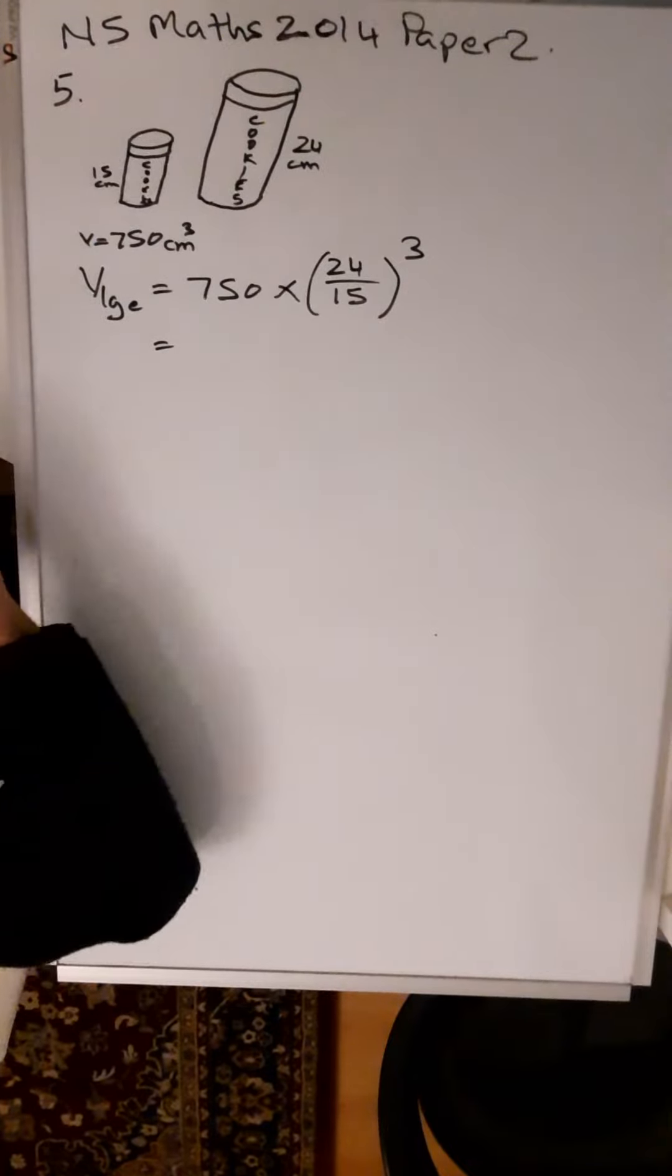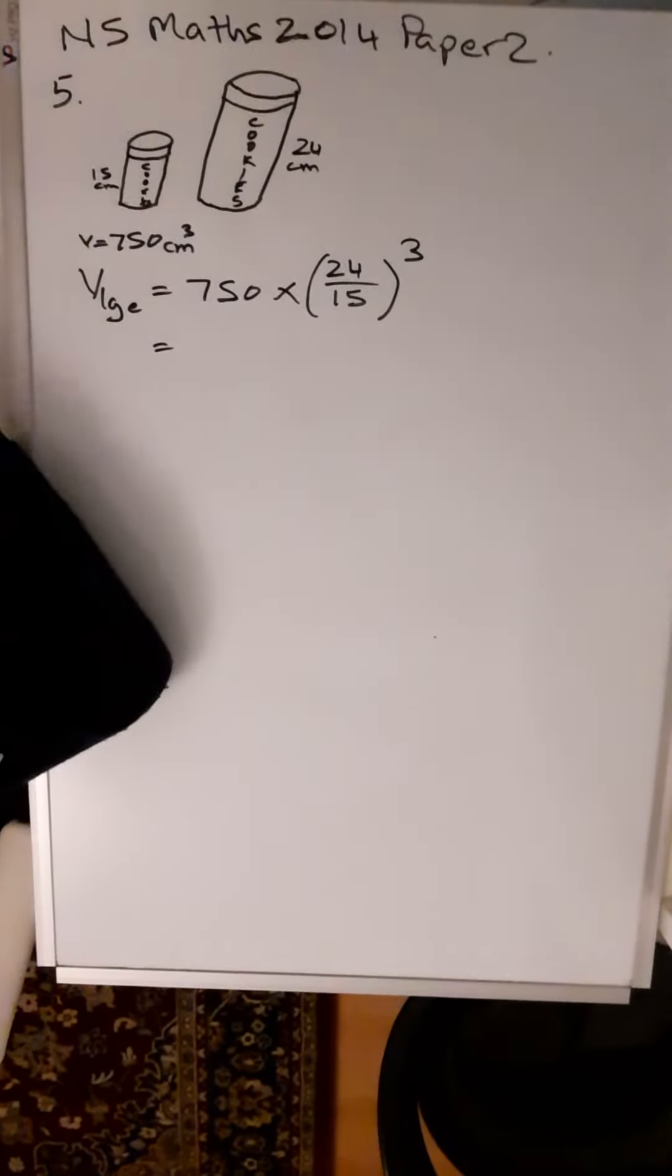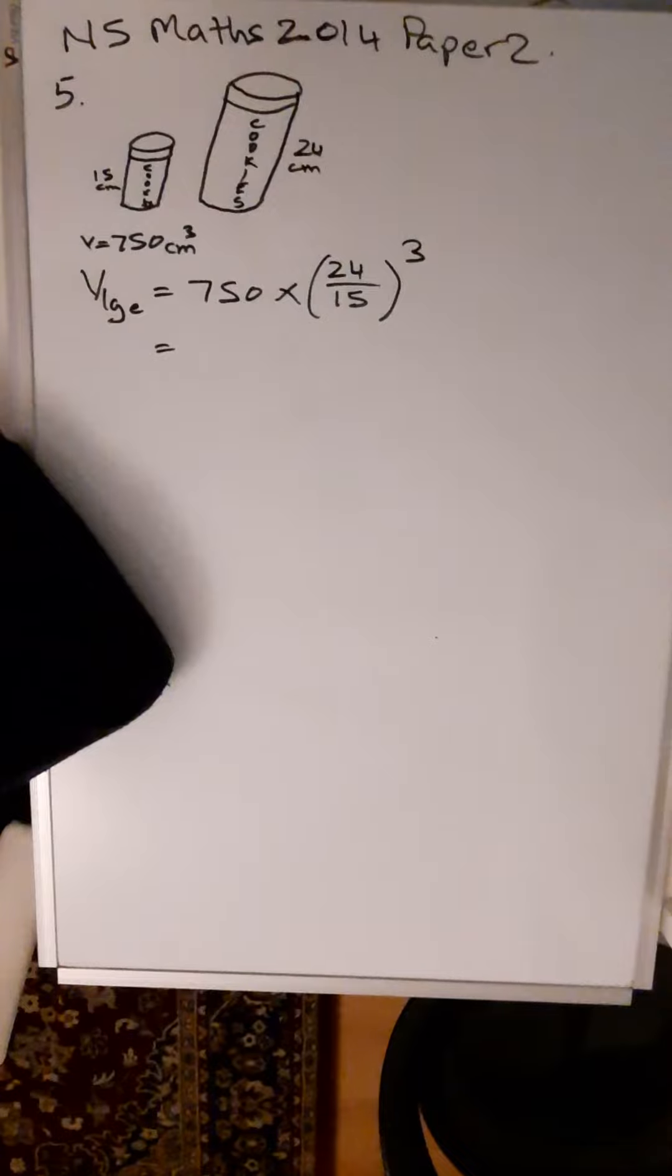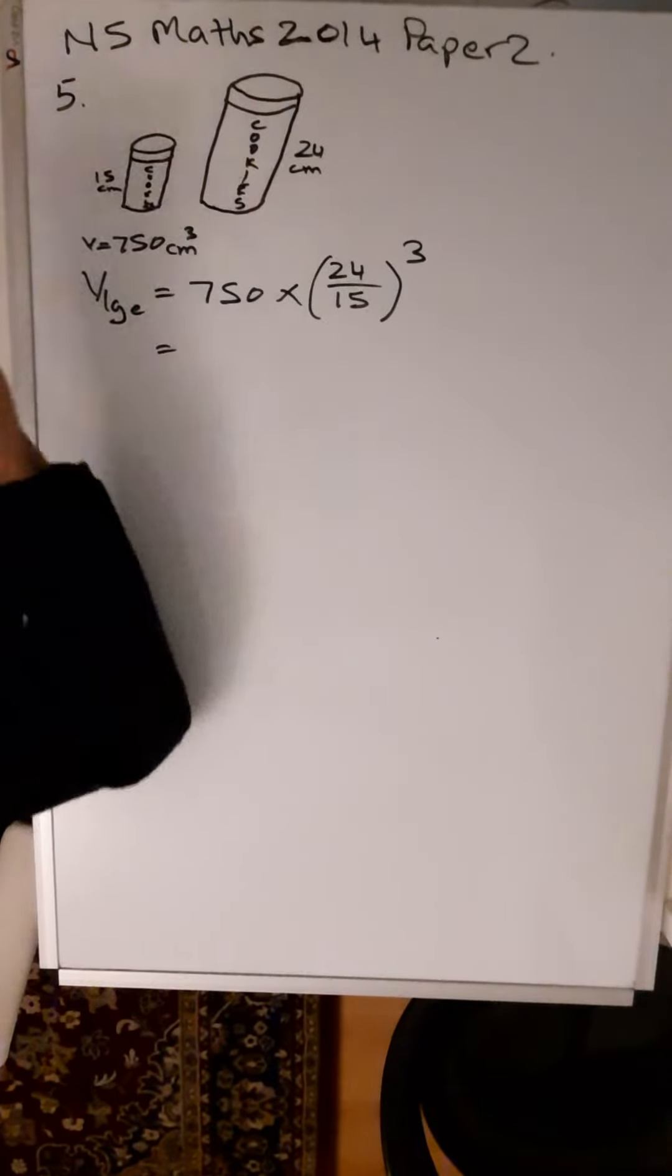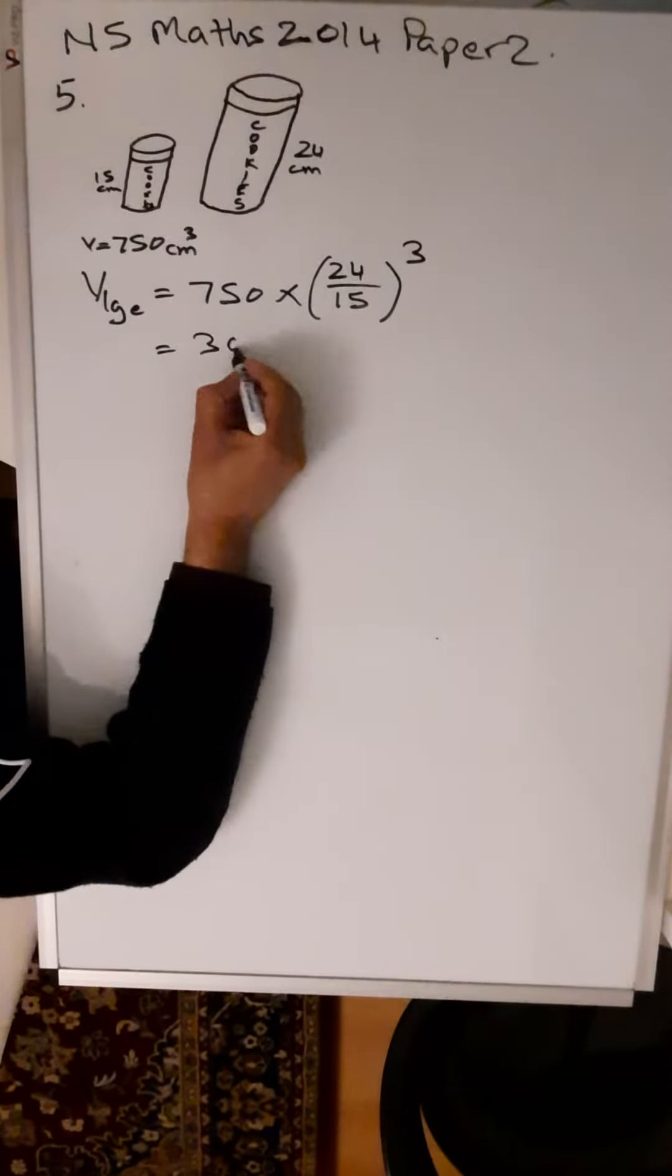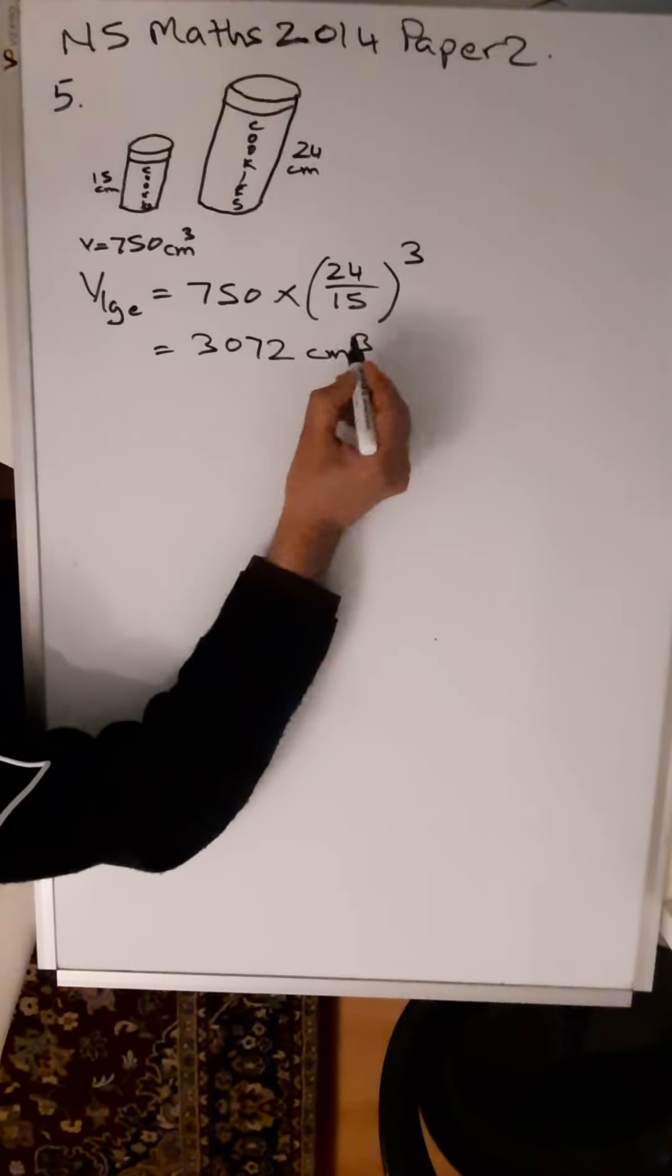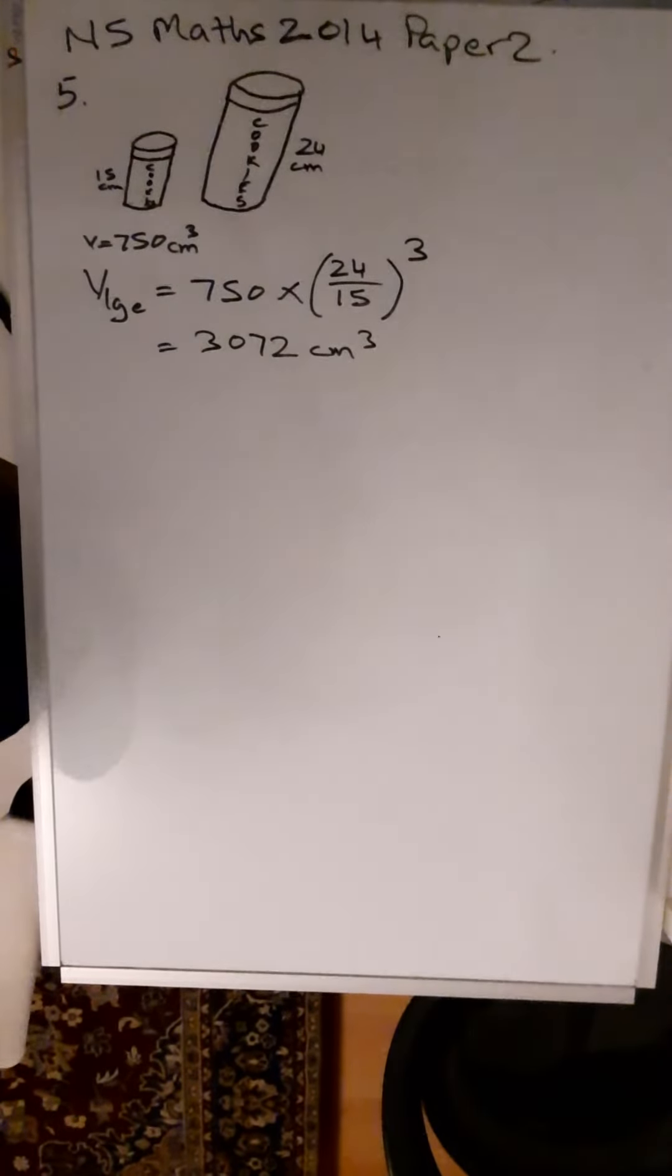There's no need to simplify that because you're going to put it into your calculator anyway. So 750 times open bracket, 24 divided by 15, close bracket, raised to the power of 3. That gives you an exact value of 3072 centimeters cubed. That's the volume of the larger jar. That's for three marks.